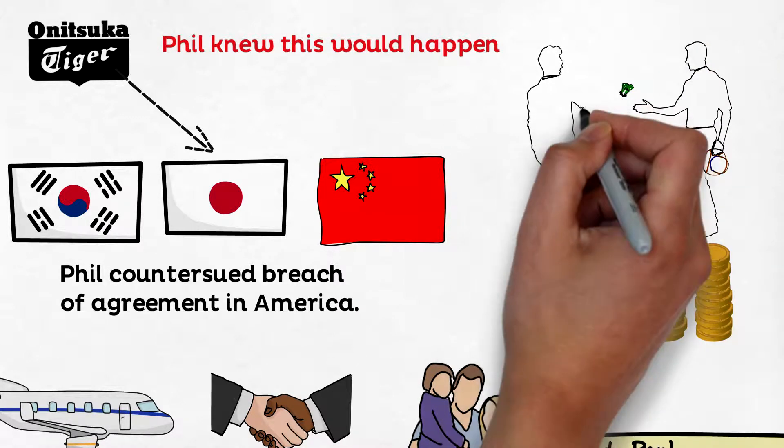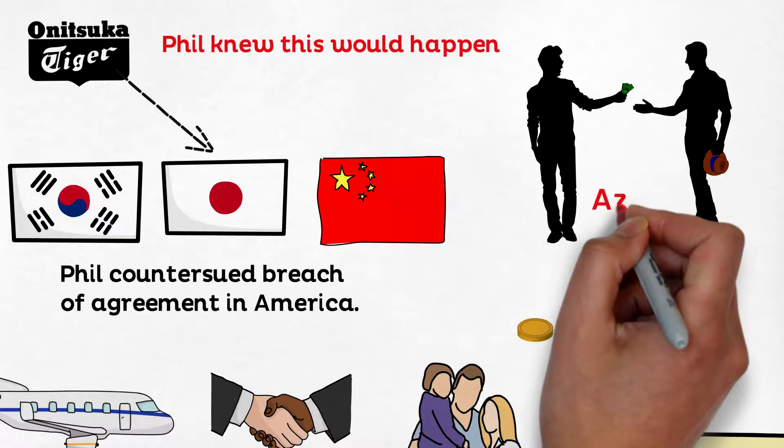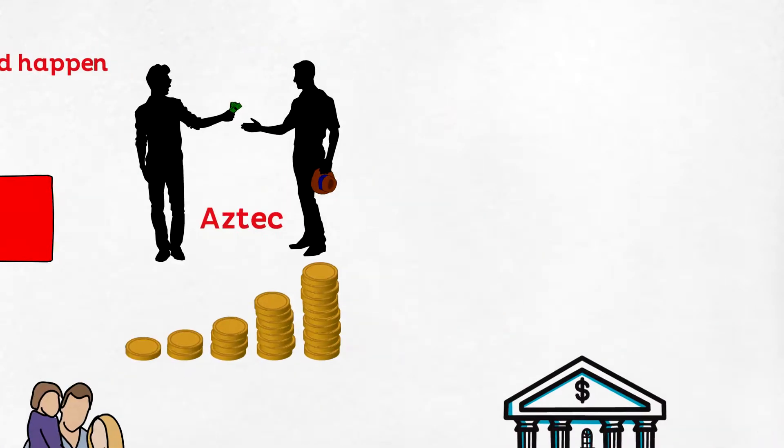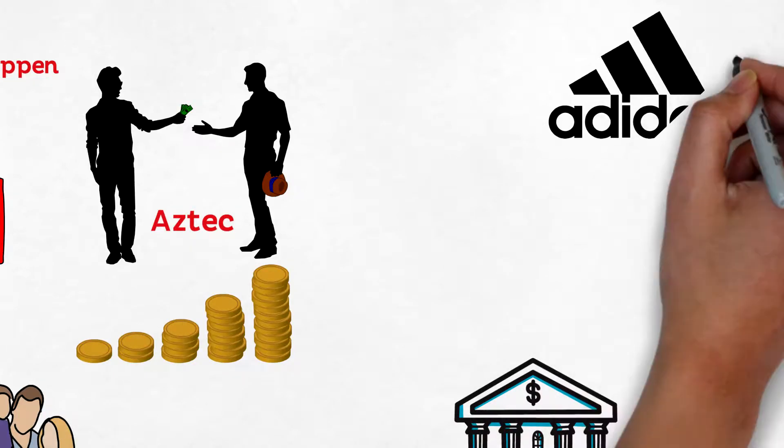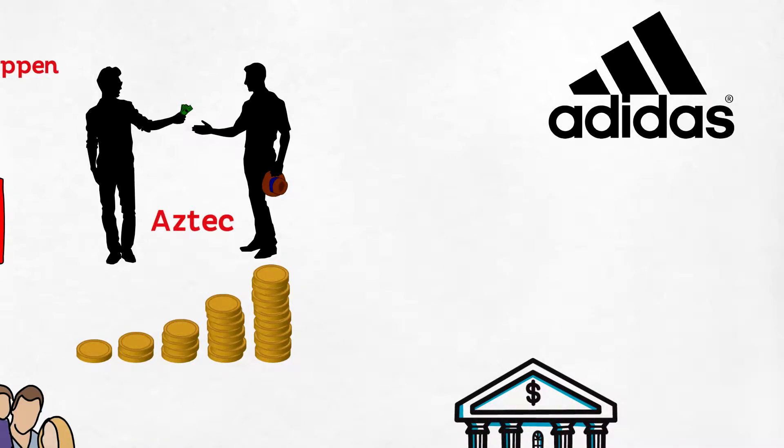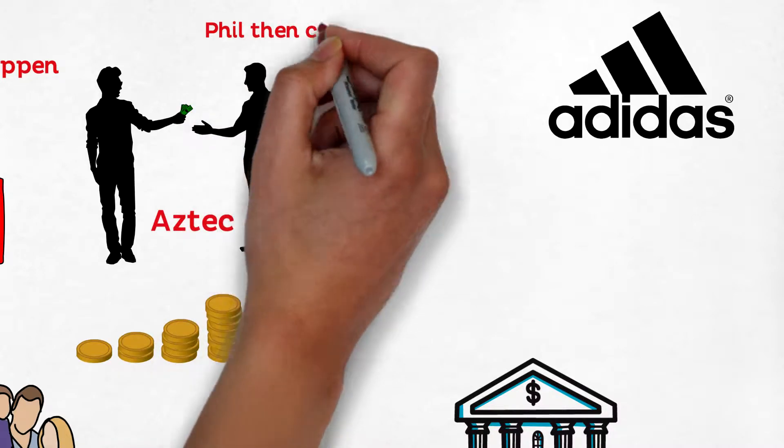Phil borrowed some money from his acquaintances and launched a shoe brand called Aztec. Adidas was in the process of creating a shoe line called Aztec and stated they would sue Phil's Blue Ribbon for infringing on the name. Phil then changed the name to Cortez.